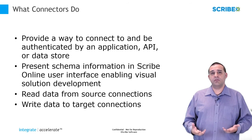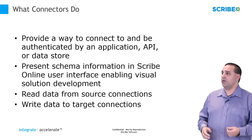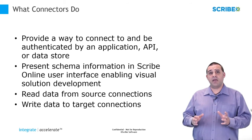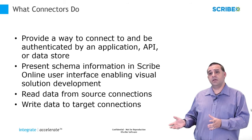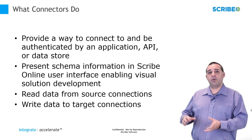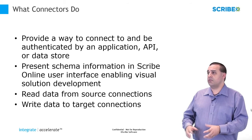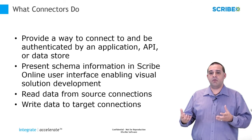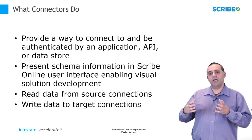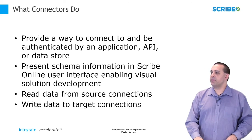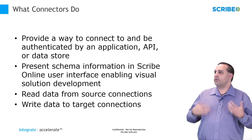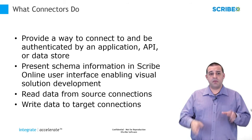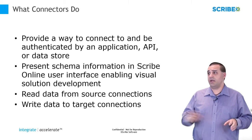What do connectors do? Connectors provide a way to connect and be authenticated by your API, by a third-party application that you want to move data in and out of on the Scribe platform. Connectors allow you to work with that application interface without additional coding. The connector will present schema information to the Scribe Online user so that they can use that information to map data back and forth.